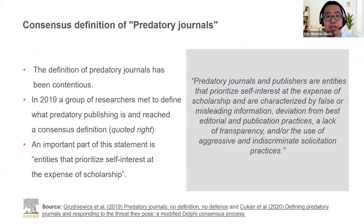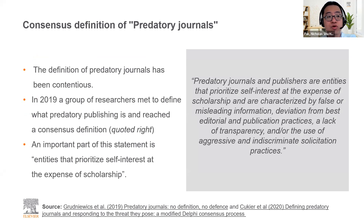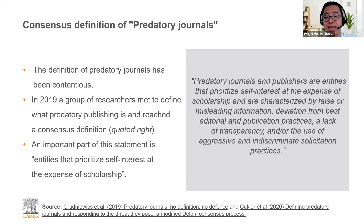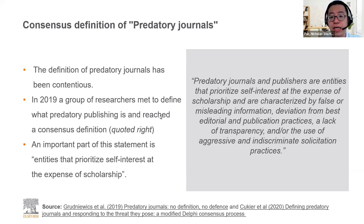When it comes to predatory definitions, it's a bit gray because there is no fixed definition for predatory journals. It has been contentious for a long time, but only recently in 2019 did a group of researchers meet to define what predatory publishing is and reach a consensus definition. Predatory journals and publishers are essentially entities that prioritize self-interest at the expense of scholarship. They are characterized by false or misleading information, deviation from best editorial and publication practices, a lack of transparency, or the use of aggressive and indiscriminate solicitation practices.